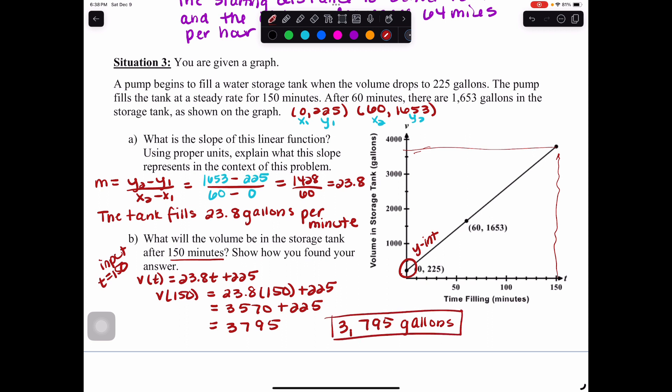This is all about modeling a linear relationship, having a real-world context, finding all the things that we've always been finding about a linear function, but describing what they mean with our parameters of slope and y-intercept. And that concludes our lesson on modeling linear relationships.